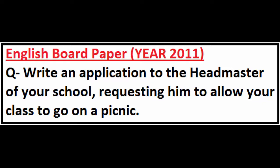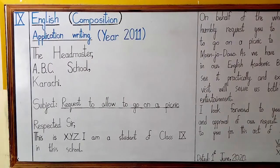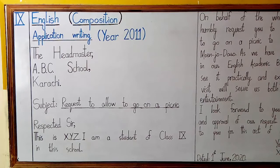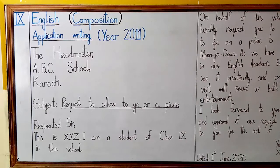Here you are with a sample application writing on the board. If you remember, I told you there are 10 parts of application: starting from name of recipient, address of recipient, subject, salutation, introduction, body, closing, ending, name or signature, and in the end, date. We will be covering all these 10 parts in this application too.